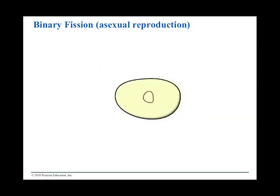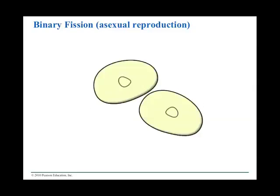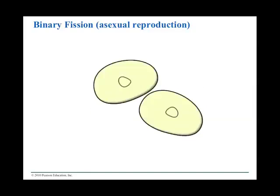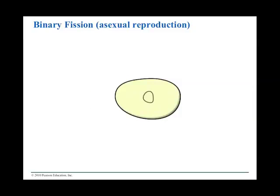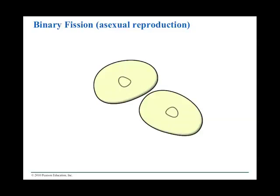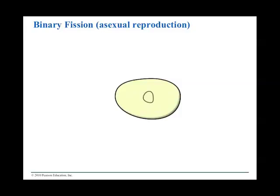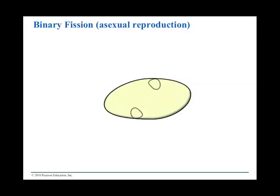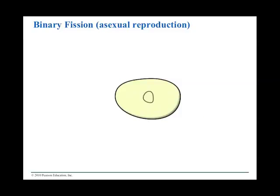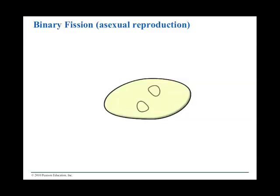It's called binary fission. Just watch how you have the one cell, the nucleus in the center, and the nucleus splits apart. It's actually not a membrane-enclosed nucleus — they've just indicated where the DNA is housed. If you remember, prokaryotes do not have a membrane-enclosed nucleus. But that is binary fission — it's asexual reproduction.